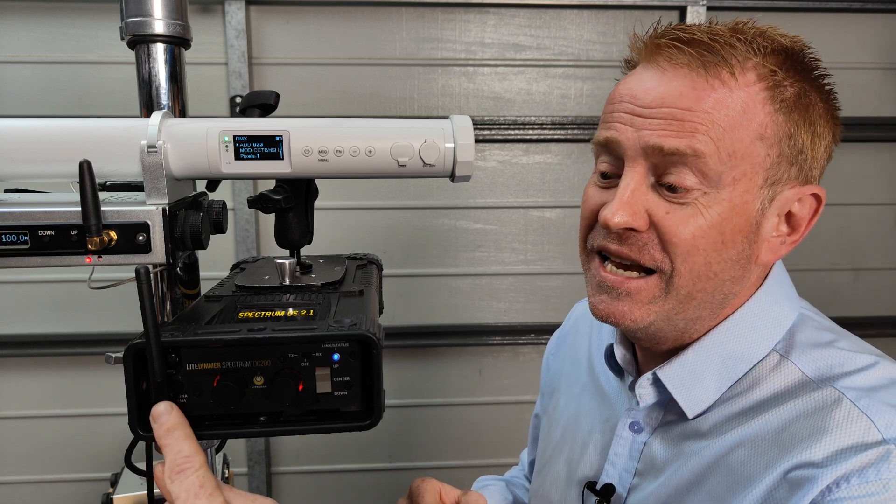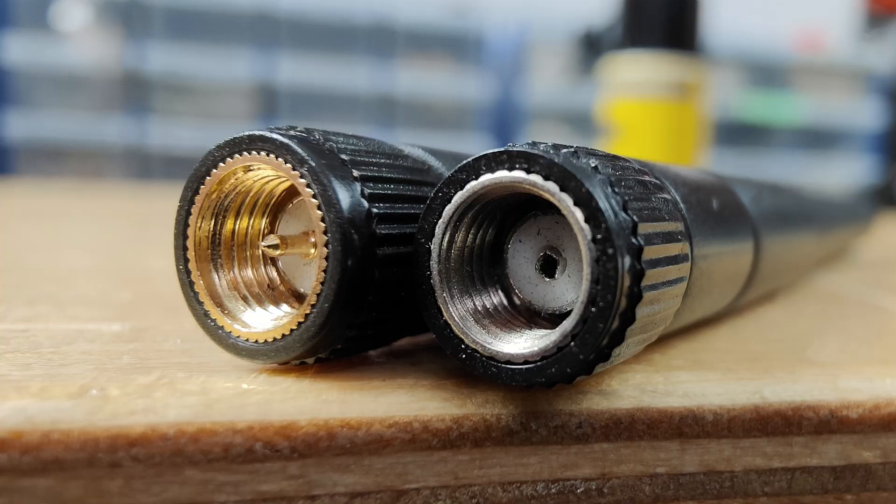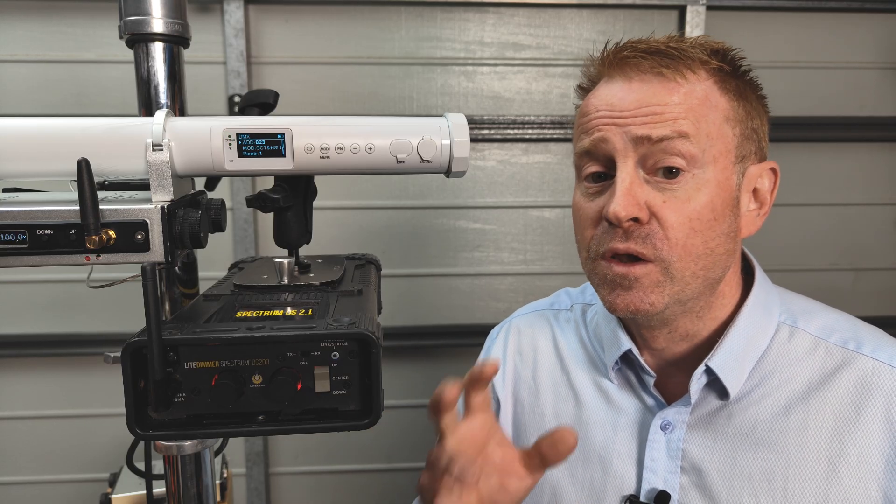Now, the last thing it could be is antenna issues. So just check that the antenna is actually connected and not in its storage position. I've done that a few times with the Spectrums. Now, if it's a rental light, I would suggest unscrewing the antenna, assuming it's meant to unscrew, and checking that it is the correct antenna. Because there are actually two types of antennas. There are antennas that have a pin in the center and antennas that don't. And sometimes with rental gear, the antennas get changed around.